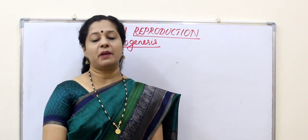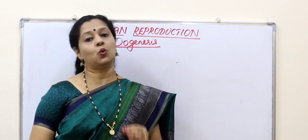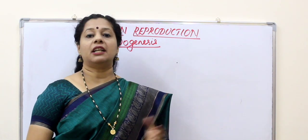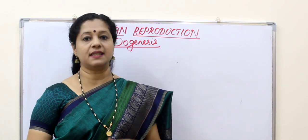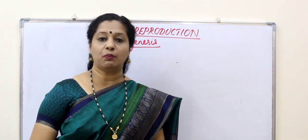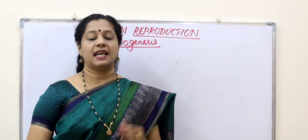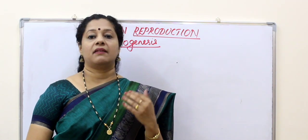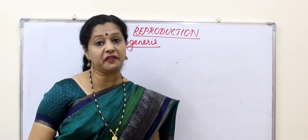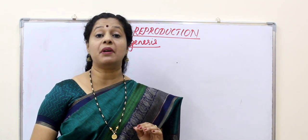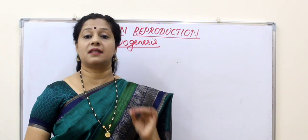The formation of a mature female gamete is called oogenesis. When we learned about sperm formation, that was called spermatogenesis, which starts at the stage of puberty. Whereas oogenesis begins when the female girl is in the womb of the mother — that means in the embryonic stage of the girl child.